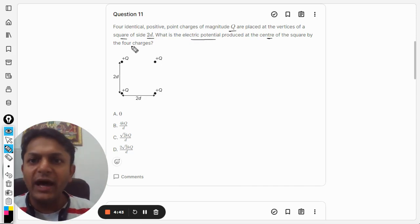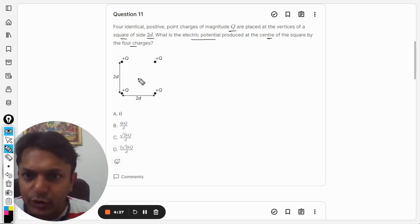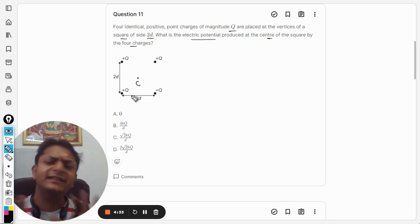So we are going to include all of the four charges now and we want to find the potential at the point C. I'm just naming it as C, like the center of the square.